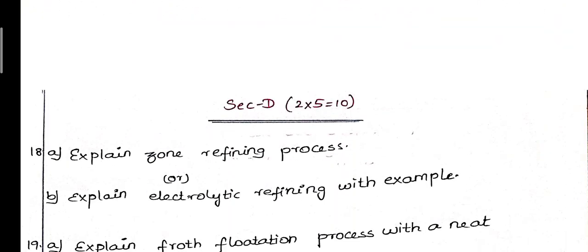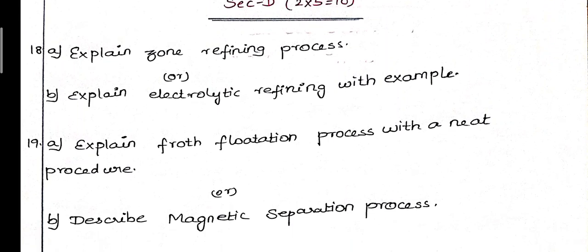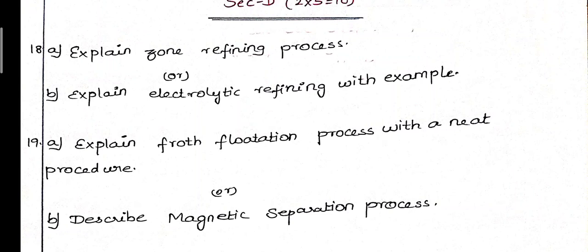Next, five marks — either or type. 18th A: Zone refining process. Or B: Explain electrolytic refining with an example. 19th A: Explain froth flotation process with a neat diagram. Or B: Describe the magnetic separation process.